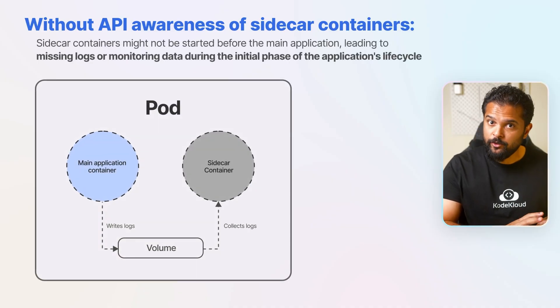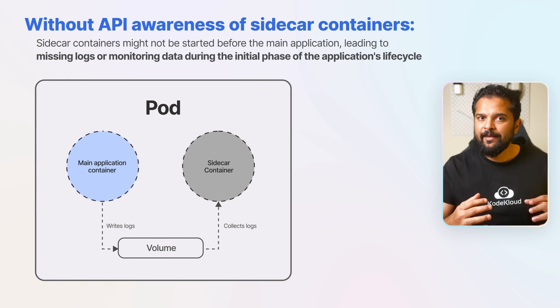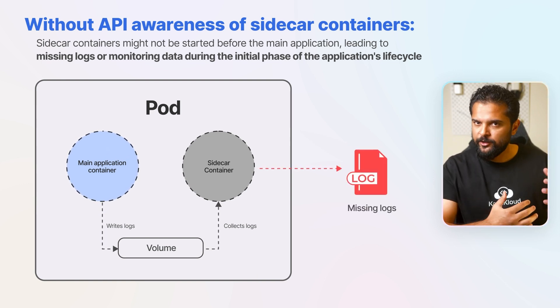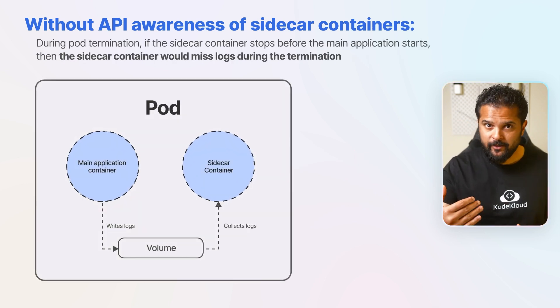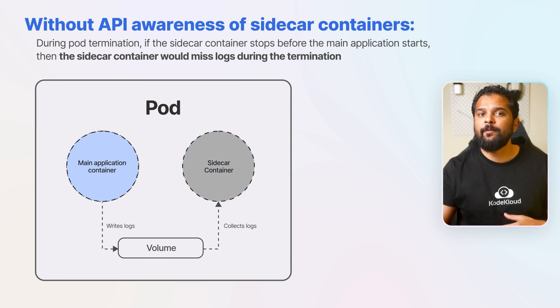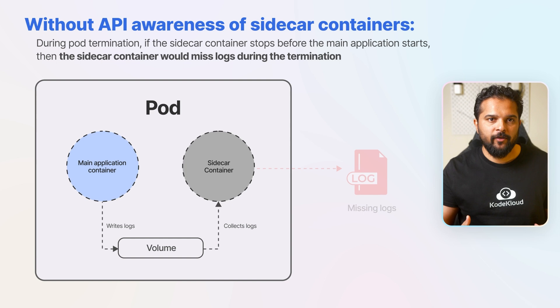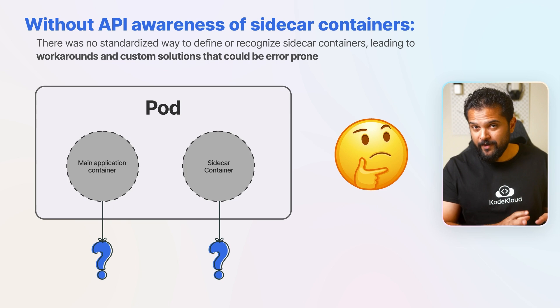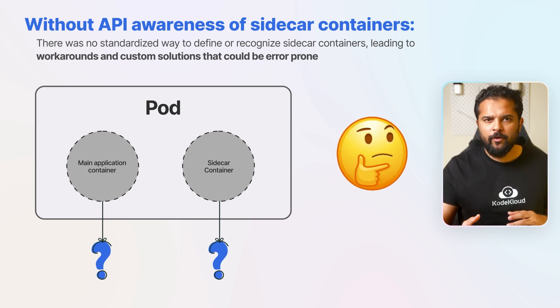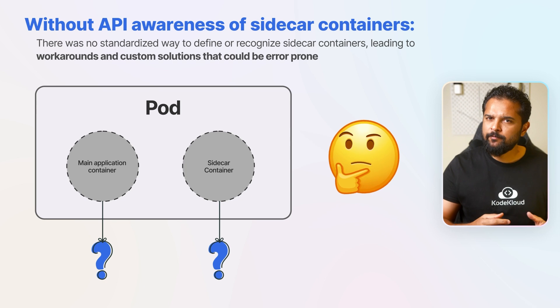This lack of distinction led to issues during pod startup and shutdown, as the order of container initialization and termination is crucial for many applications. For example, if the sidecar container was not started before the main application starts, that would lead to missing logs during the initial phase of the application's lifecycle. The same applies during pod termination — if the sidecar container stops before the main application stops, it would miss logs during termination. There was no standardized way to define or recognize sidecar containers, leading to workarounds and custom solutions that could be error prone.